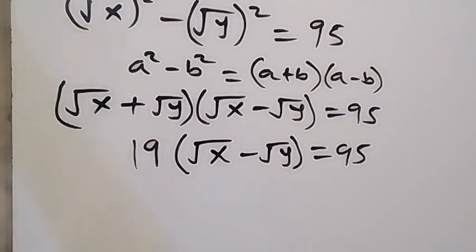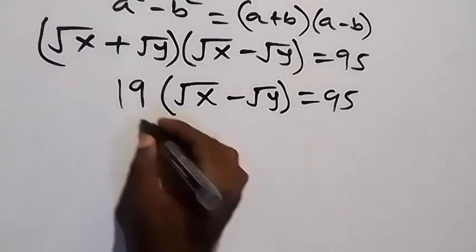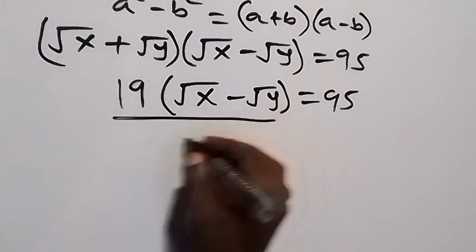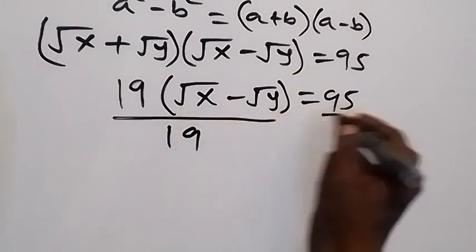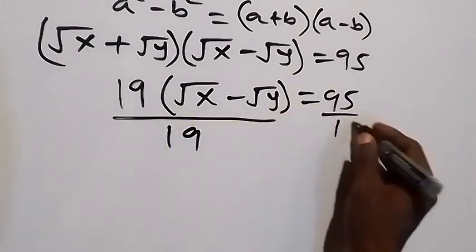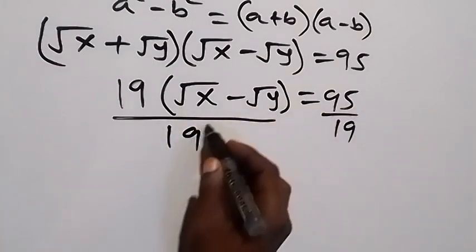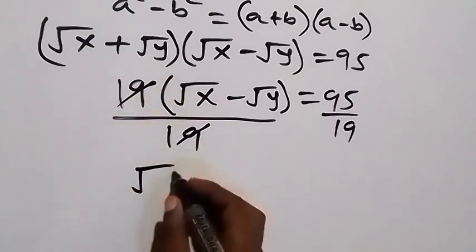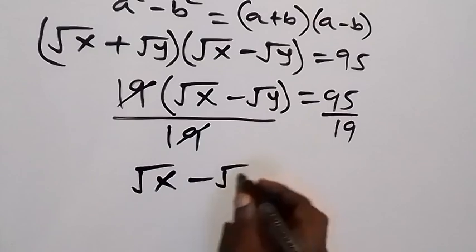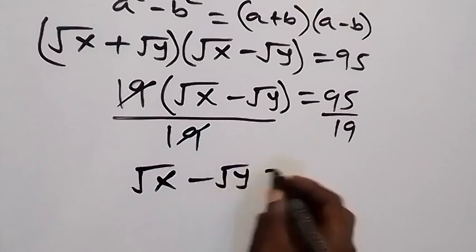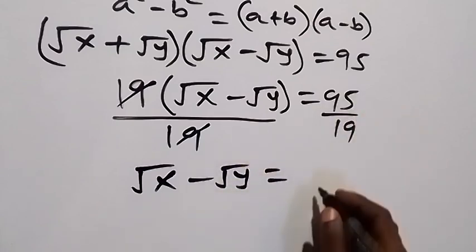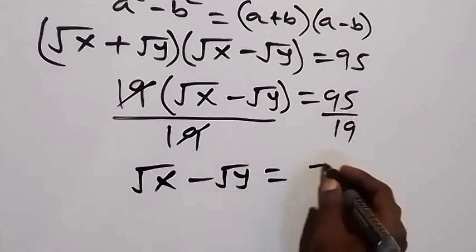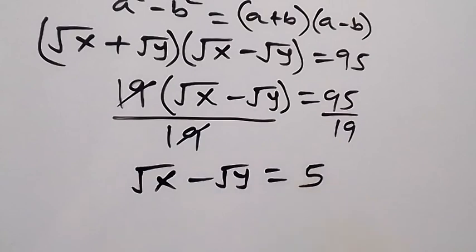We divide both sides by 19 in order to remove 19 on the left side. After dividing, 19 cancels 19, and we get root x minus root y equals 95 divided by 19, which is 5.